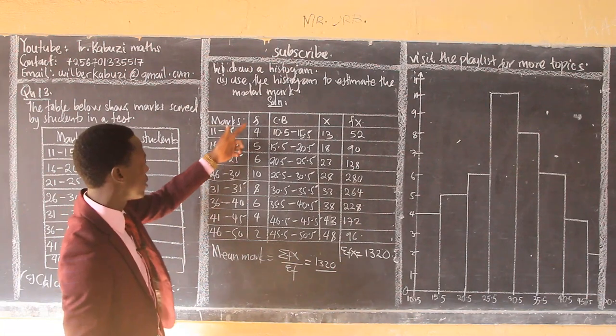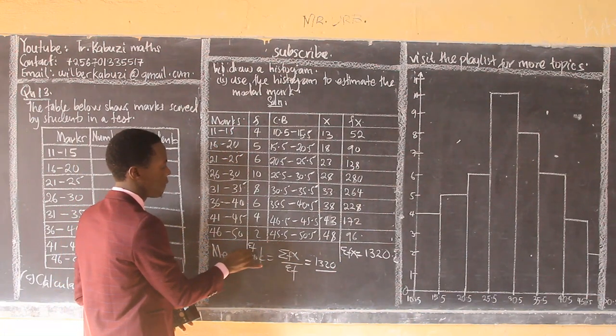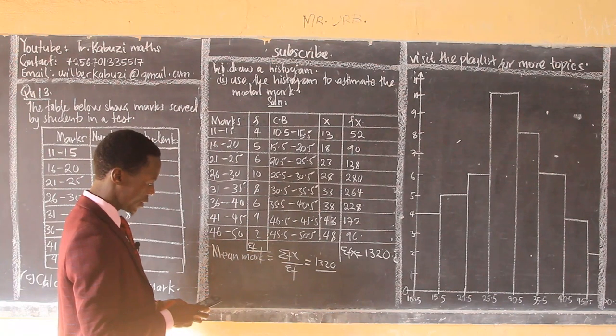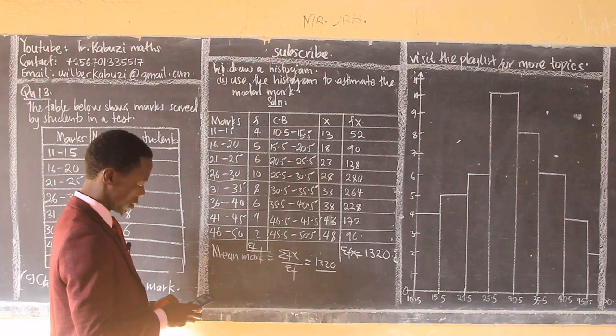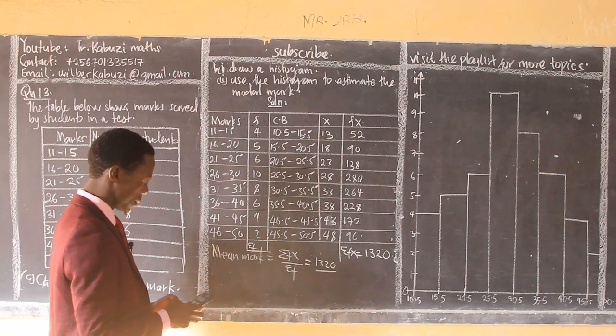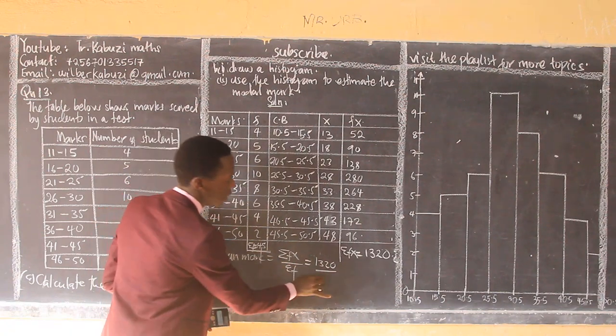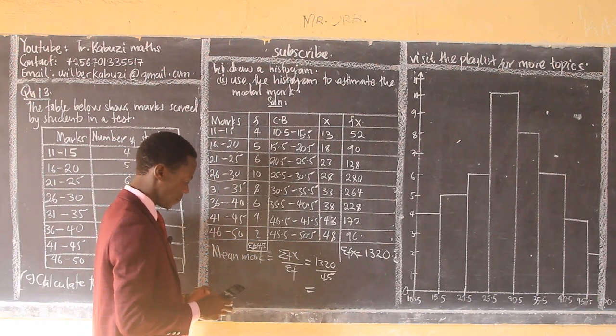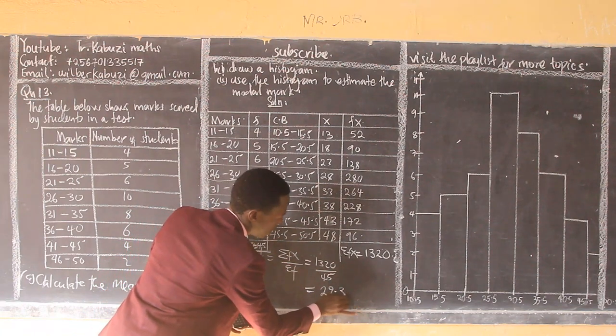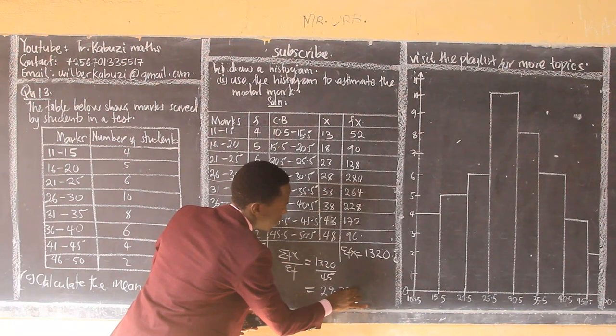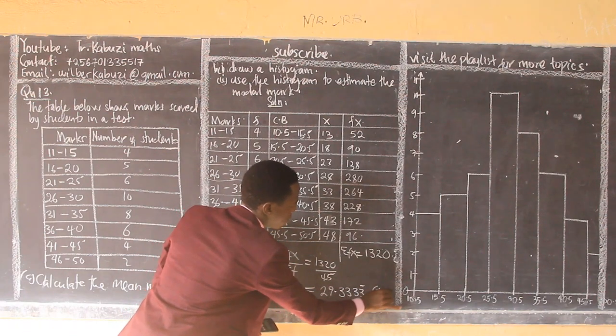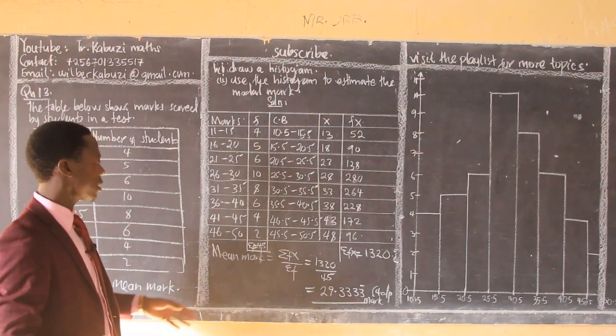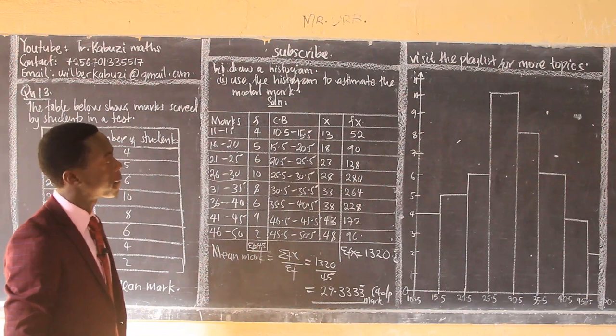The frequency here, they are telling us in the table. So we sum now. We get our summation f there by summing those students. So if we sum them, 5 plus 6, I am getting 45. So that's the sum divided by 45. And so my answer is going to be 29.33 recurring. I am giving this to four decimal places. And these are marks. So this is now our mean mark.